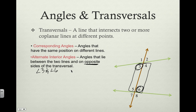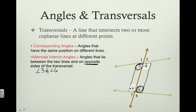Additionally, angle four and angle five are on opposite sides of our transversal — we have to cross over the line to get to angle five — and they are in between the two lines that the transversal intersects. So angle four and angle five would be alternate interior angles.